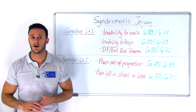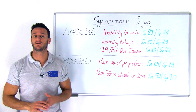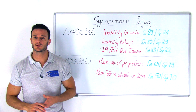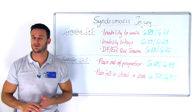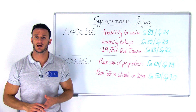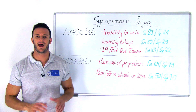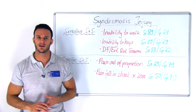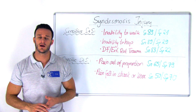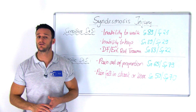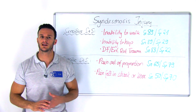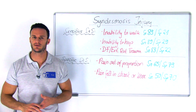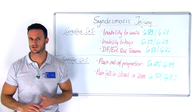More specific signs and symptoms include pain out of proportion for a usual inversion trauma, with a sensitivity of 65% and a specificity of 79%, and pain felt in the shank or the knee during injury, with a sensitivity of 50% and a specificity of 70%.